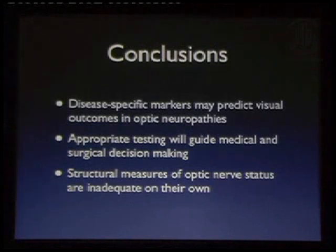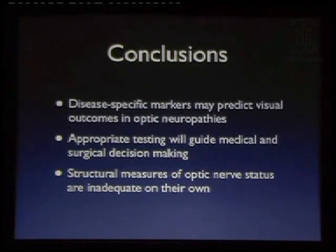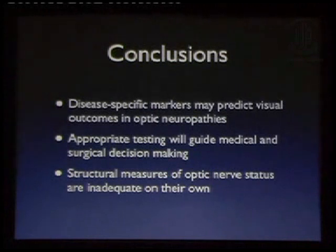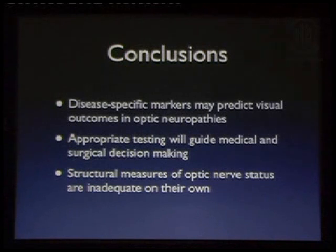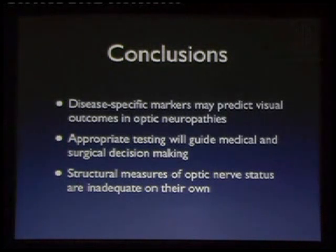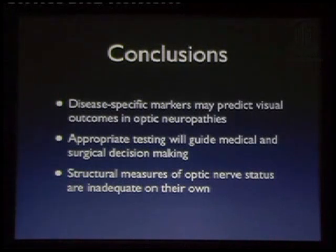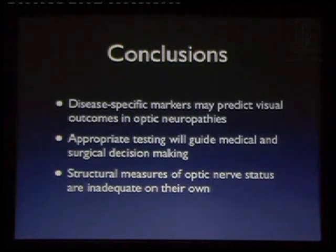In conclusion, disease-specific markers may well predict visual outcomes in optic neuropathy, as the NMO-IgG does in patients with recurrent optic neuritis. Appropriate testing can help guide medical and surgical decision-making. With optic neuritis, we may be able to predict at the initial presentation with axial diffusivity whether patients are going to have visual recovery. And finally, structural measures of optic nerve status are inadequate on their own to allow you to predict on that basis alone whether visual recovery is going to occur. Thank you very much.